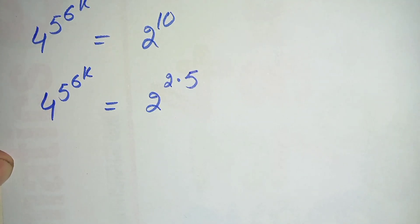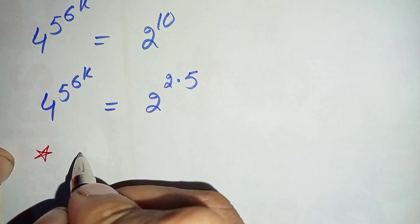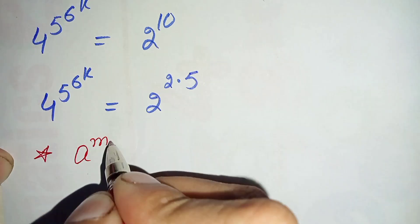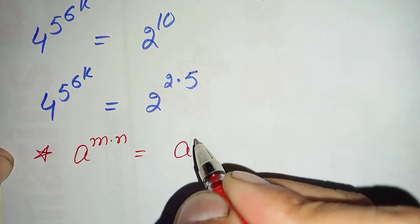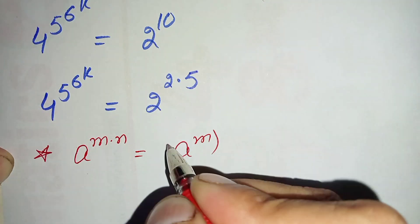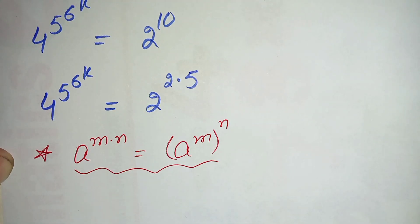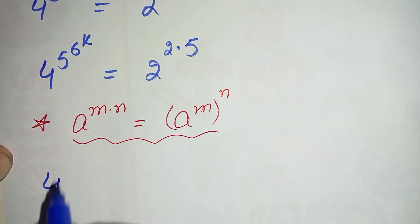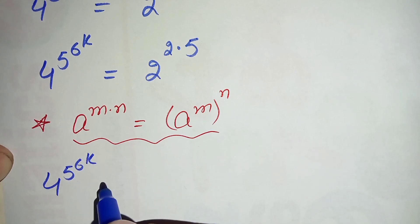On the right hand side of this equation, we will use an exponential math property. The property is: a raised to power m times n can also be written as a raised to power m, whole raised to power n. Using this exponential property, the left hand side remains the same: 4 raised to power 5, raised to power 6, raised to power k.